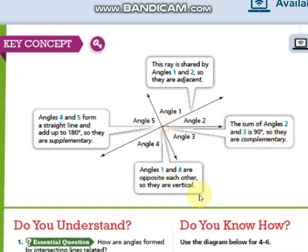And the other type of relation is the vertical. Vertical means they are opposite to each other. If you have two rays or two lines, the two angles that are facing each other, we call them vertical.